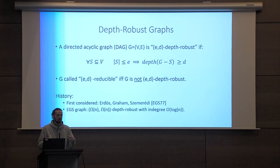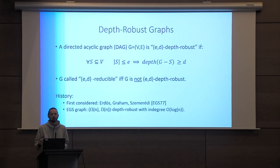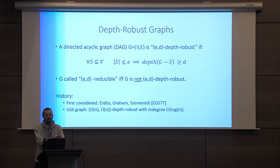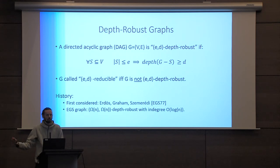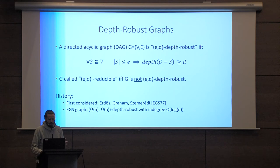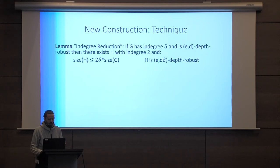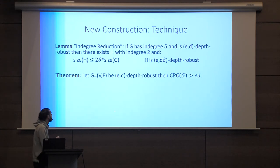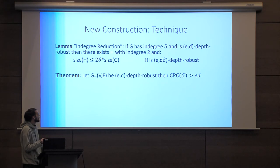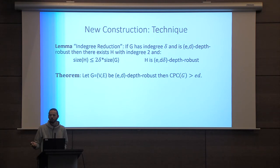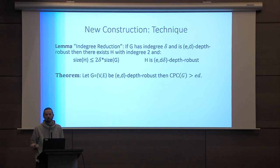Depth robustness is the following property: given a graph G, we say it is (e,d)-depth robust if for any subset of nodes of size e that you remove, there will remain a path of length d. This is a combinatorial property. The main theorem we show is: if a graph is (e,d)-depth robust, then the CPC of the graph is greater than e × d.